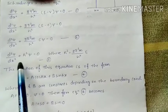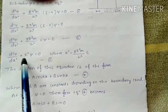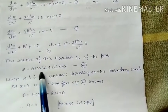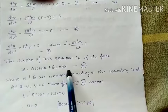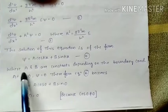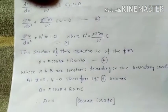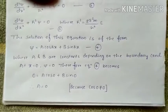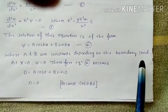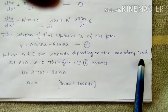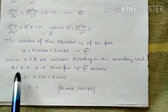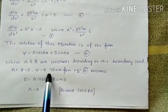The solution of this second order differential equation can be written in the form: psi equals A cos(kx) plus B sin(kx), where A and B are constants. These A and B are constant values depending upon the boundary conditions, so we must find A and B from the boundary conditions. Let us consider the first case: at x equals 0, psi equals 0.